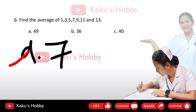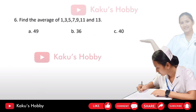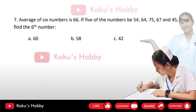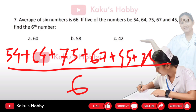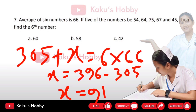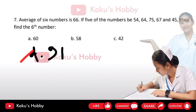Question number 7: the average of 6 numbers is 66. If 5 of the numbers are 54, 64, 75, 67, and 45, then find the 6th number. The answer is 91, and the correct option is D.